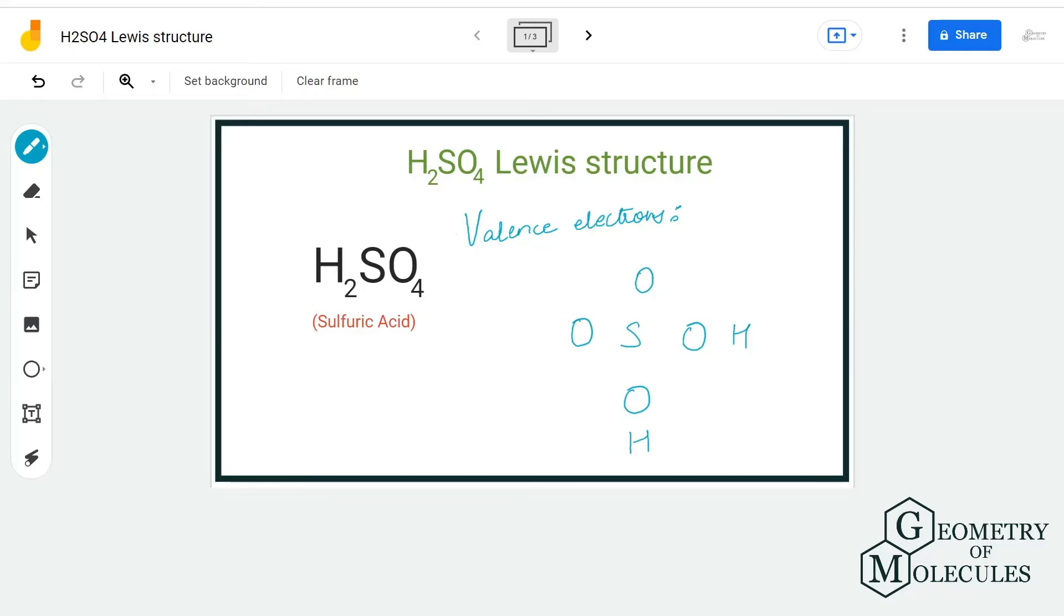Hi guys, welcome back to our channel. In today's video we are going to help you find out the Lewis structure for H2SO4 molecule. It is the chemical formula for sulfuric acid, and to determine its Lewis structure we will first look at the total number of valence electrons.